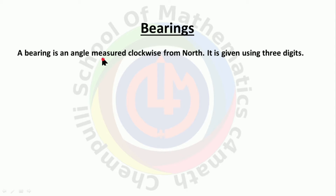A bearing is an angle measured clockwise from north. There are two directions: clockwise and anti-clockwise. In bearings, we use the clockwise direction from north. In all cases, we take the upward direction as north.